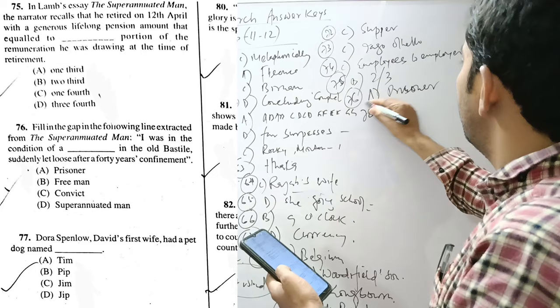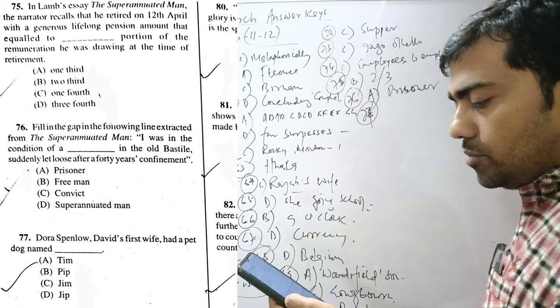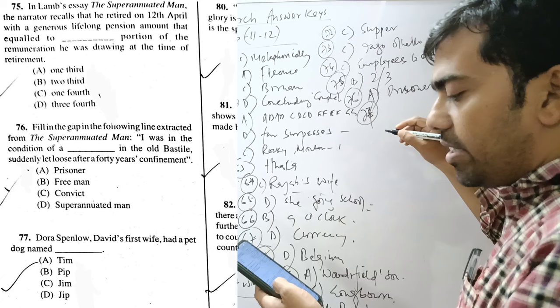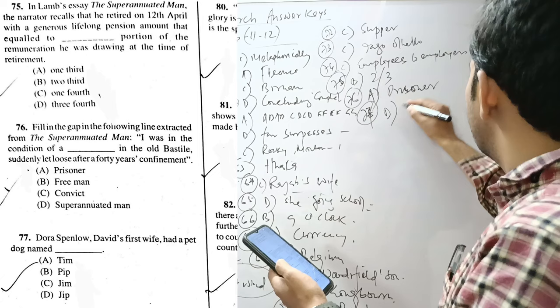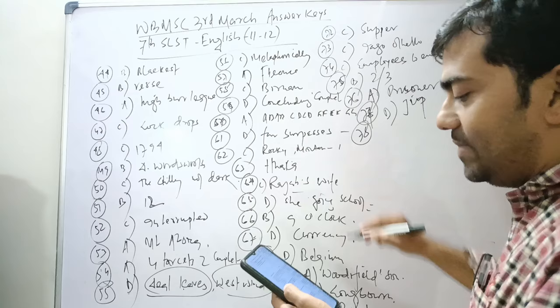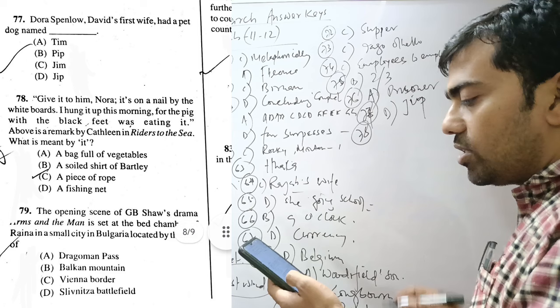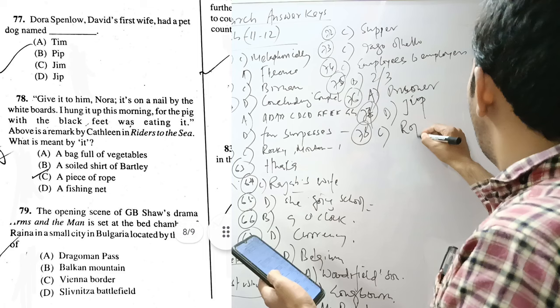Question 77. Dora Spenlow, David's first wife, had a pet dog named - very innocent type of lady and very childlike. So, Jip. She had a pet named Jip. David Copperfield. Question 78. Give to him, Nora. It's on a nail by the whiteboard. I hung it on the morning for the pig. So, it is the rope. A piece of rope.